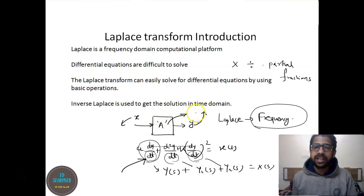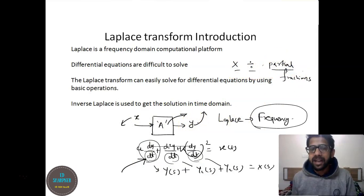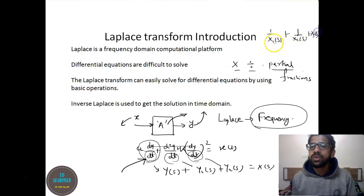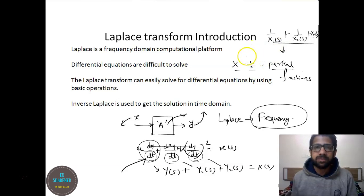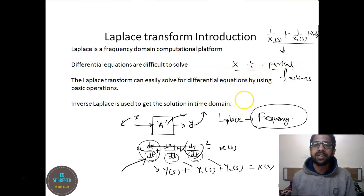Inverse Laplace is used to get the solution back in the time domain. When we have computed all the Laplace transforms and done the basic computations, we get known Laplace forms such as X1(s), X2(s), or X3(s). These known Laplace forms can be converted back via inverse Laplace transform. You need to remember the typical Laplace transforms of general expressions so that you can take both Laplace and inverse Laplace to easily solve input-output characteristics.